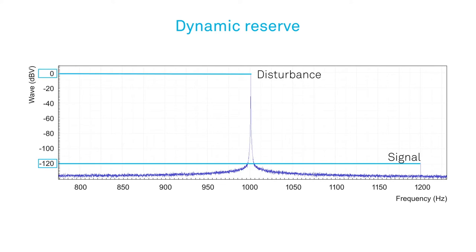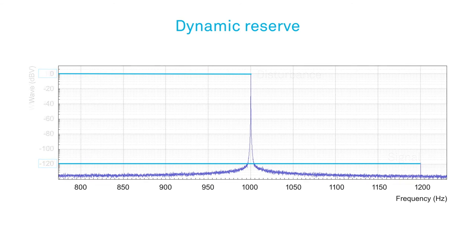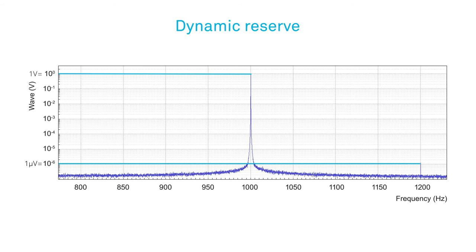With a dynamic reserve of 120 dB, for example, you can measure a 1 µV signal with a specified accuracy of 1% with a nearby disturbance of up to 1 V.